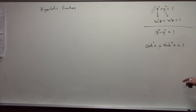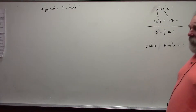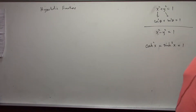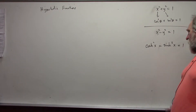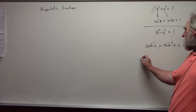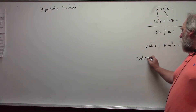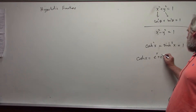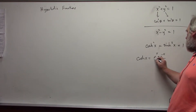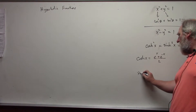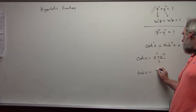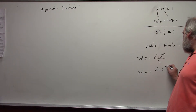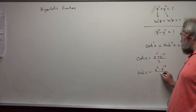This is the basic identity. Now you might ask: what are cosh and sinh? We can write these in another way to understand what's happening. Cosh of x is e to the x plus e to the negative x, over 2. And sinh of x is e to the x minus e to the negative x, over 2.